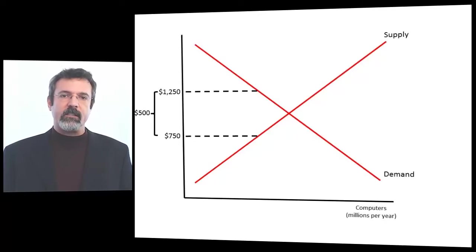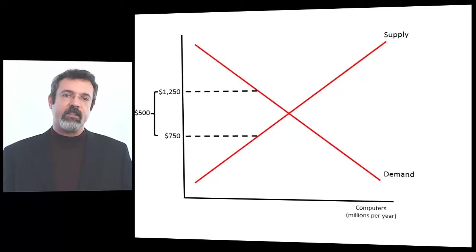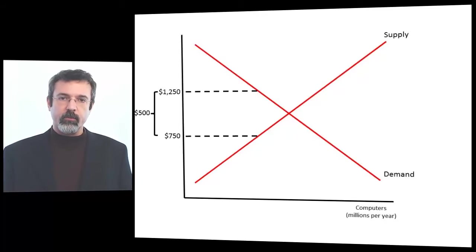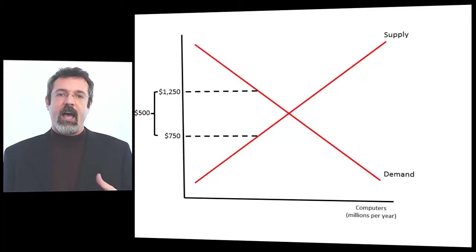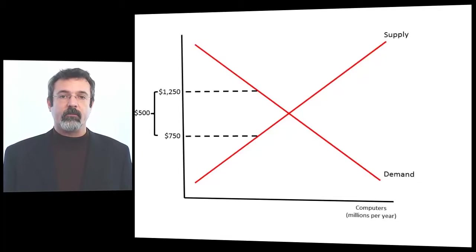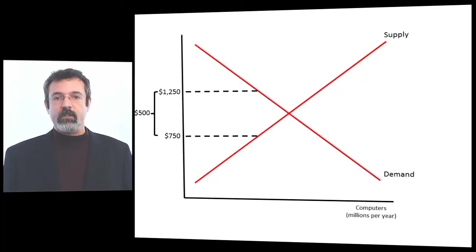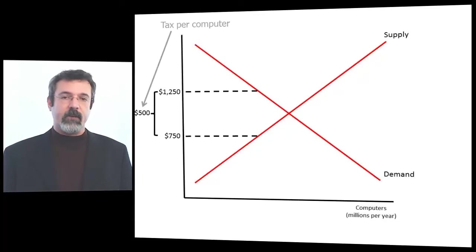The consumer price is the price the consumer pays with the tax included. The producer price is the price the producer receives after handing the tax over to the government. The difference between these two prices is $500 — that's the tax that goes to the government.